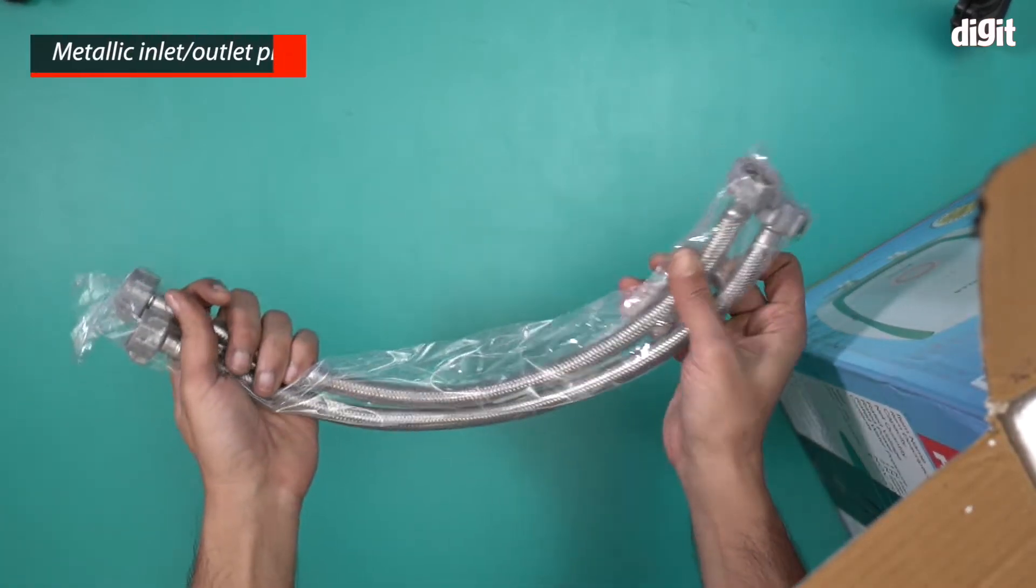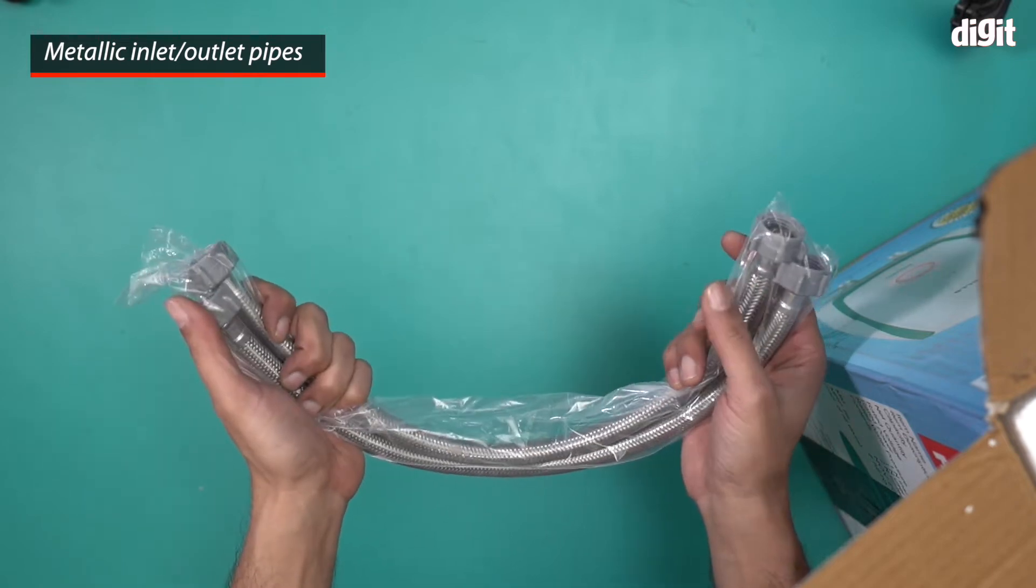These are the pipes that you'll attach to the geyser, the inlet and outlet portions. I will show you what they are.